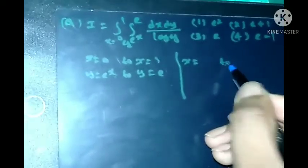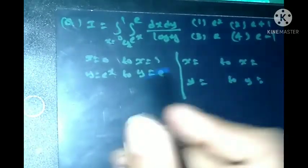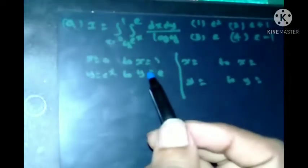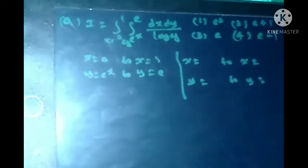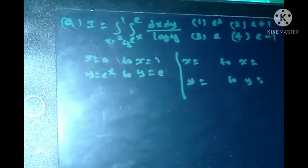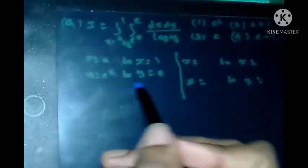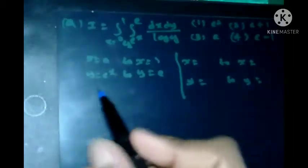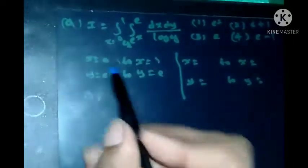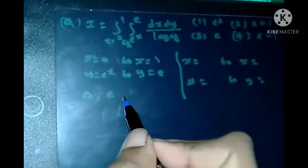We want to change these limits into new limits. Here x limits are constant; after we change the limits, y limits becomes constant. First, what we do? First, x limits substitute in the y values.